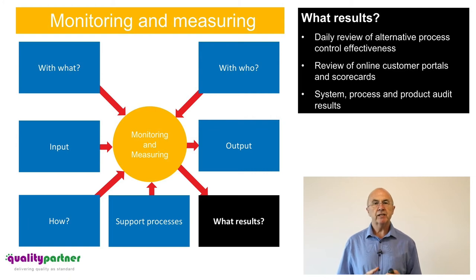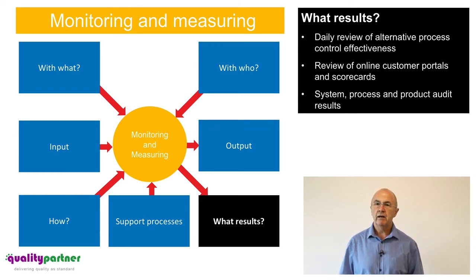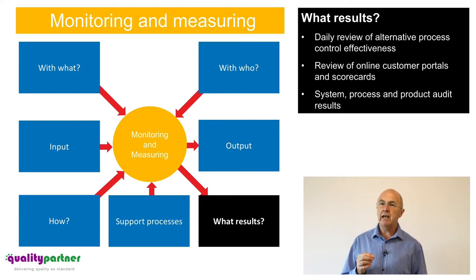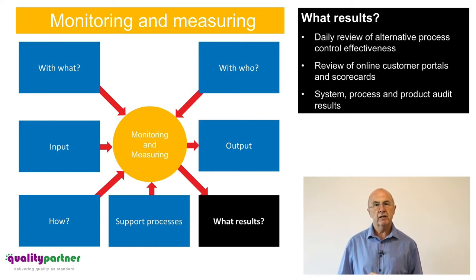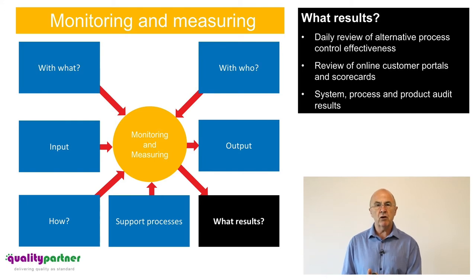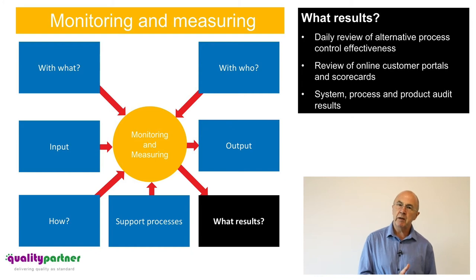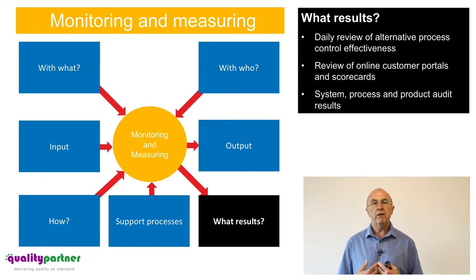Part of monitoring and measuring is making sure we've met customer-relevant objectives and organisation-defined objectives linked back to policy and strategic direction. IATF 16949 brings in additional requirements. There is now a documented requirement for daily reviews where alternative process control measures are in use — measures that are not the normal process control. We should be making sure on a daily basis that those alternative controls are working effectively so that we supply product meeting customer requirements. We should also be reviewing customer scorecards and portals where available.